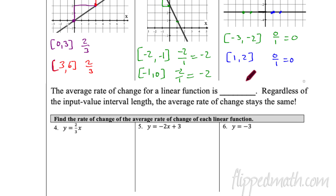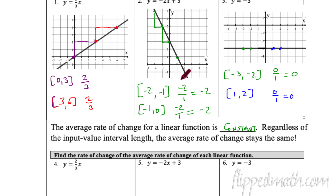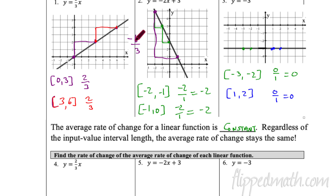The average rate of change for a linear function is constant. That means regardless of the input value or interval length, the average rate of change stays the same. To prove it for number two: using the very first and very last point — from −2 to 1, we go down 6 and over 3, which is −6/3, reducing to −2. Same result.